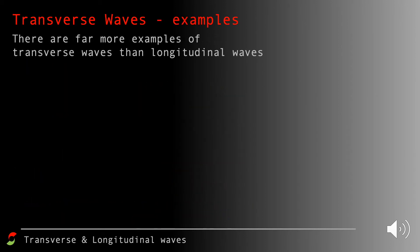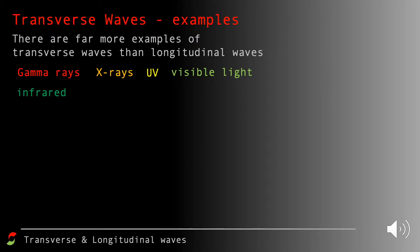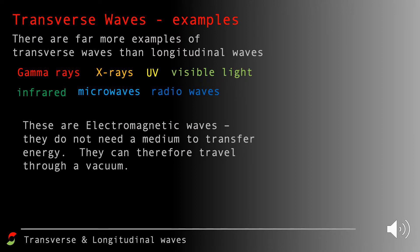Examples of transverse waves include gamma rays, X-rays, UV, visible light, infrared, microwaves, and radio waves — together they make up the electromagnetic spectrum. These don't require a medium; they can travel through a vacuum, which is how we receive energy and information from the sun. There is also a seismic S wave (secondary wave) which is a transverse wave, giving us seven electromagnetic examples plus seismic S waves.